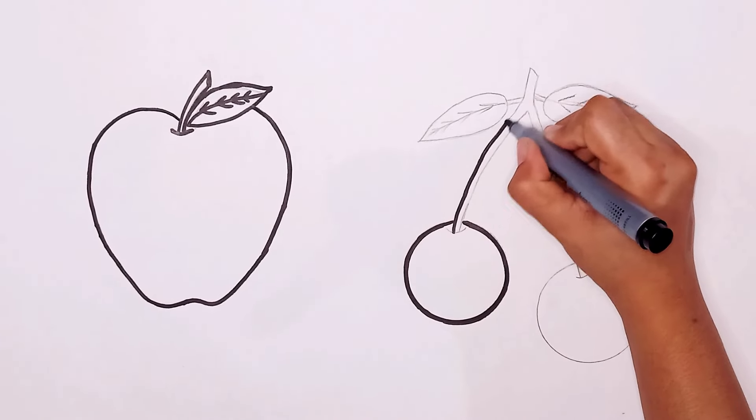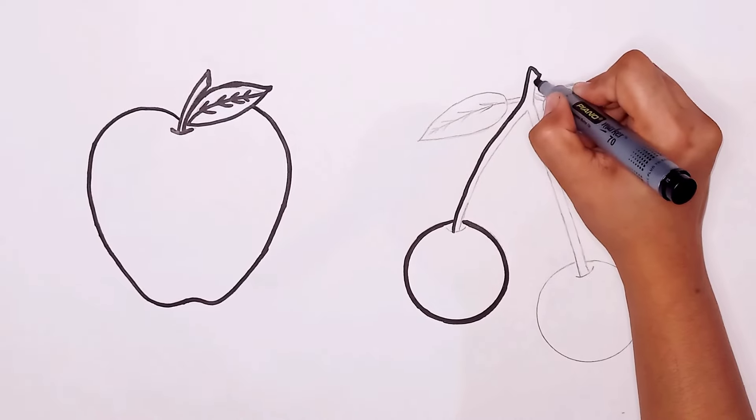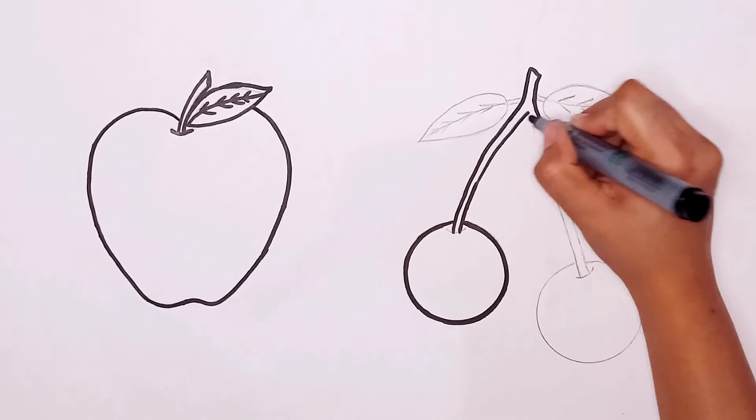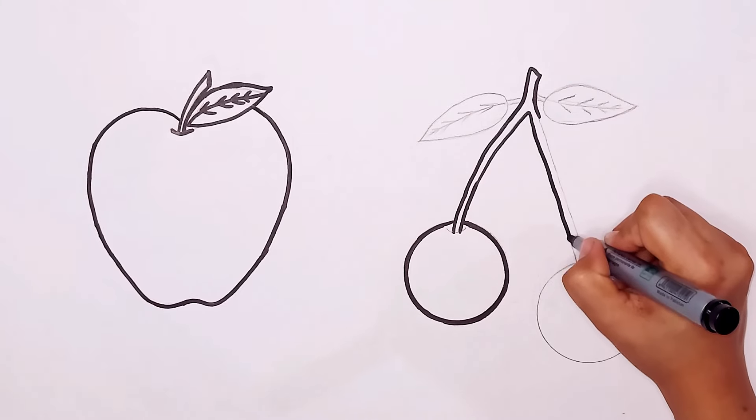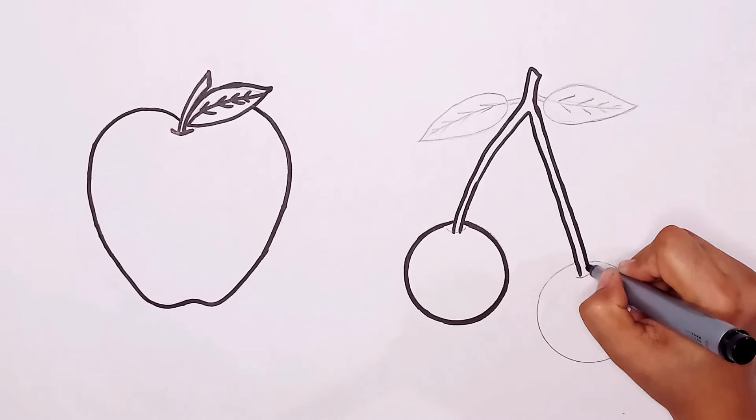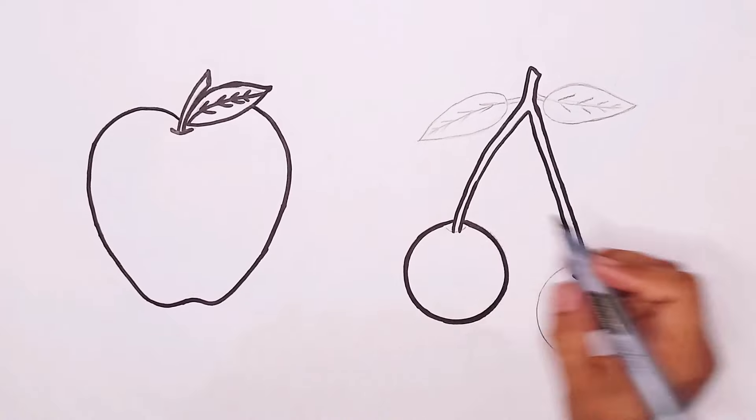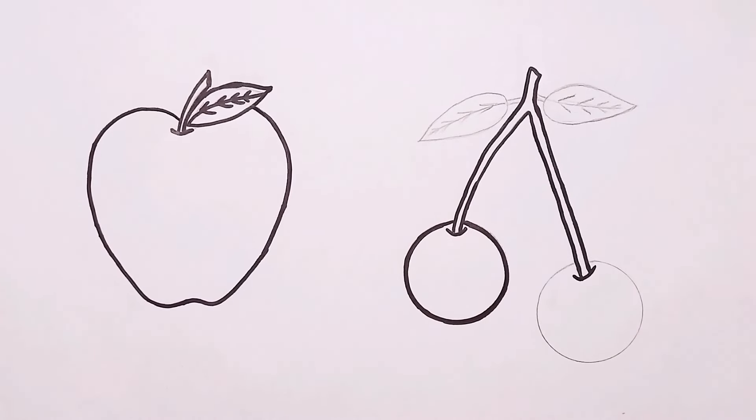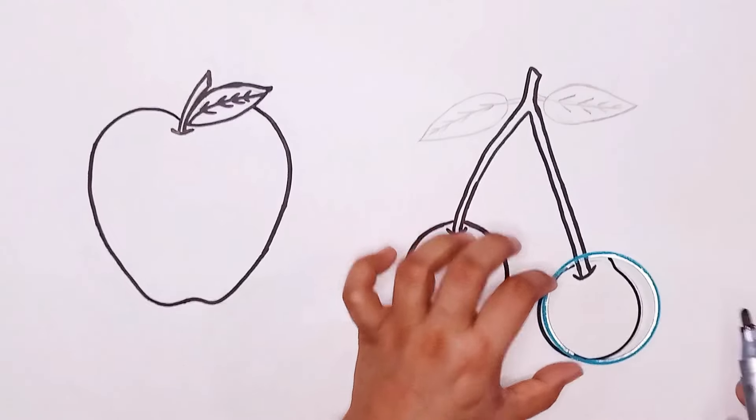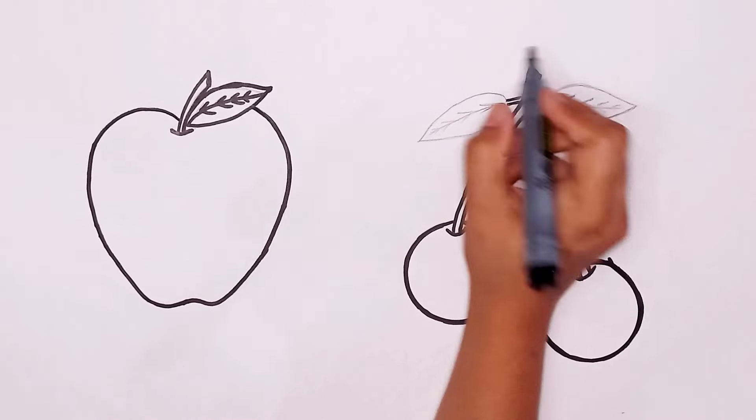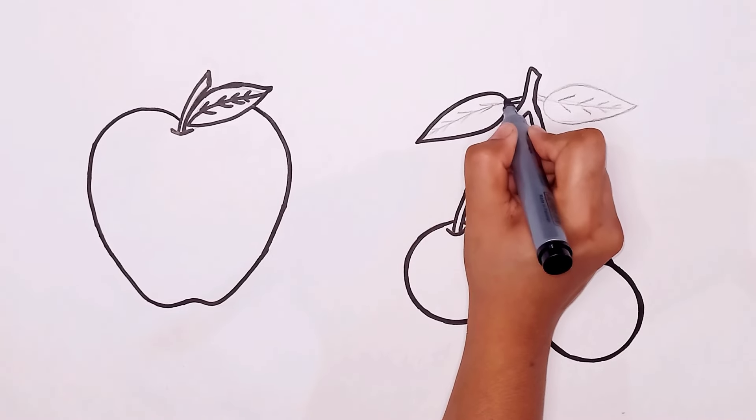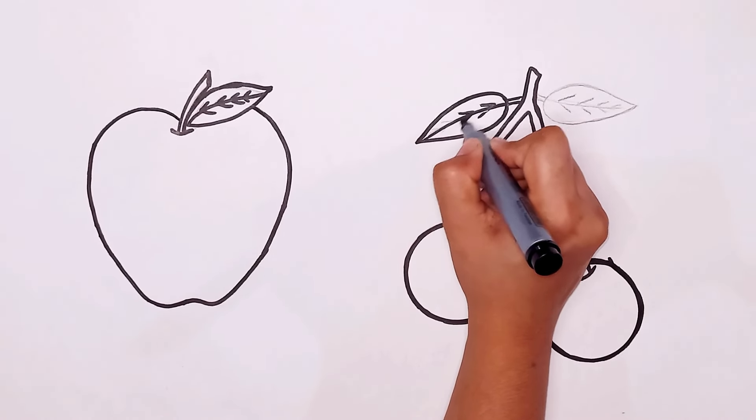C is for cat, c-c-cat. D is for doll, d-d-doll. E is for elephant, e-e-elephant. F is for frog, f-f-frog. G is for goat, g-g-goat. H is for hand, ha-ha-hand.